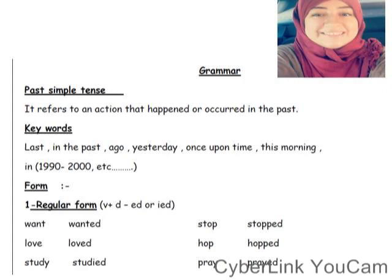The form used with all subjects — he, she, it, I, we, they, you — if it's a regular verb, we add ED, IED, or D to the end. For example: want → wanted (add ED), love → loved (add D).